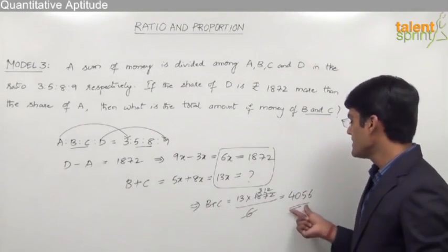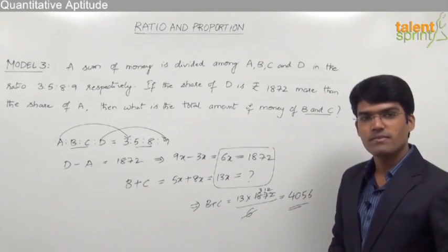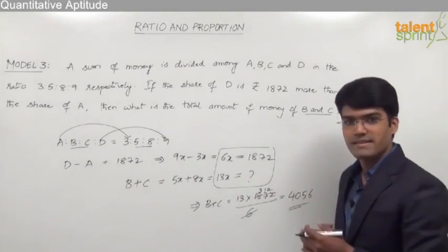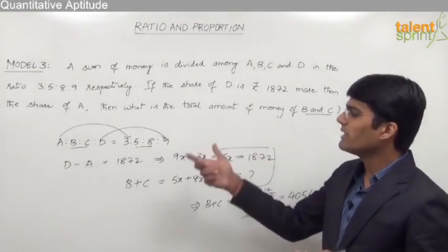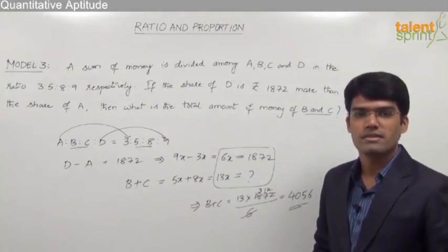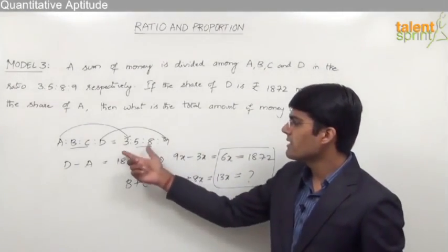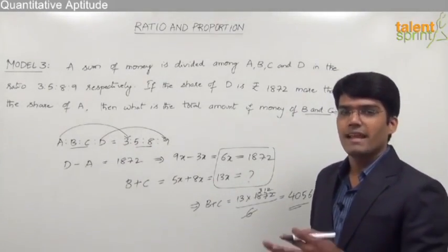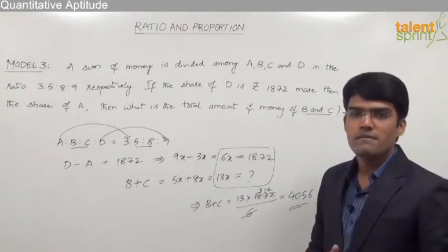So the total amount with B and C is rupees 4056. So friends, as you have seen in this example, we need not do lengthy calculations for these type of questions. Simply we can consider the given ratio as number of parts between the persons and then work accordingly from the given information.